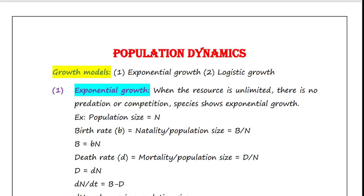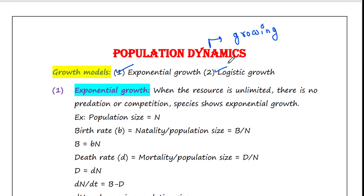Dynamics means something which is growing. We have two growth models: the exponential growth model and the logistic growth model. First let's talk about the exponential growth model. This type of growth model is not very much possible in our practical life.